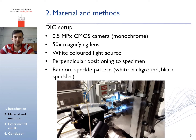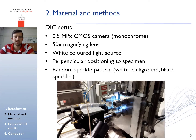Our DIC setup for fatigue crack observation consisted of a 0.5 megapixel CMOS monochromatic camera equipped with a 50 times magnifying lens, which can be seen here on the picture. The specimen surface was lit by a white colored light source, which was guided by an optical fiber cable. This setup ensured a clear and sharp view on the random speckle pattern on the surface of the specimen, which is inside our fixture system.